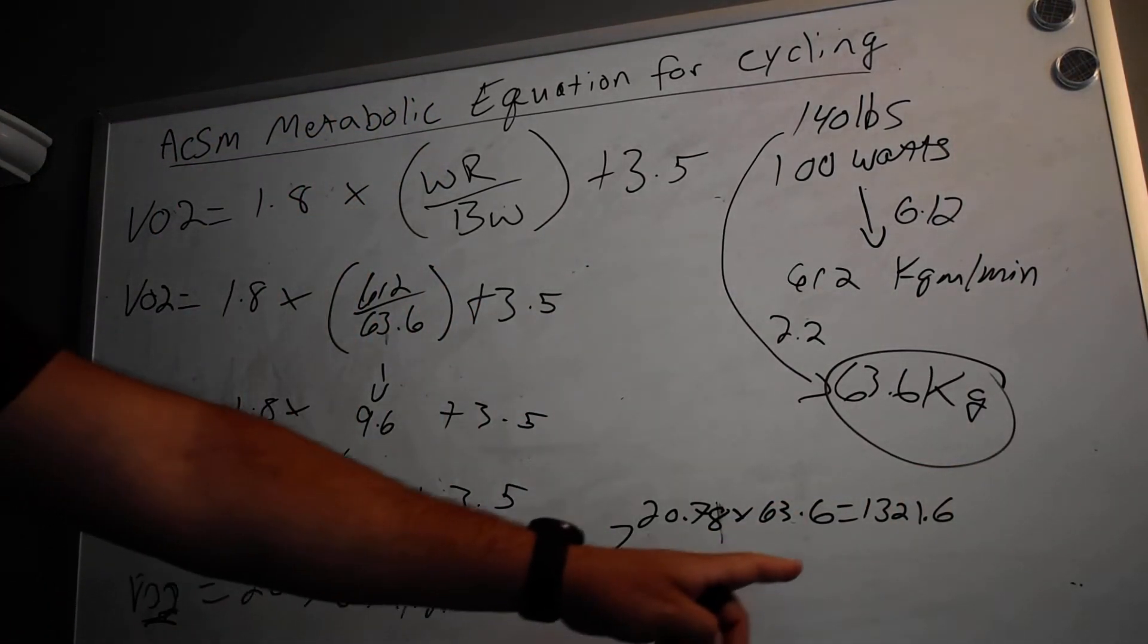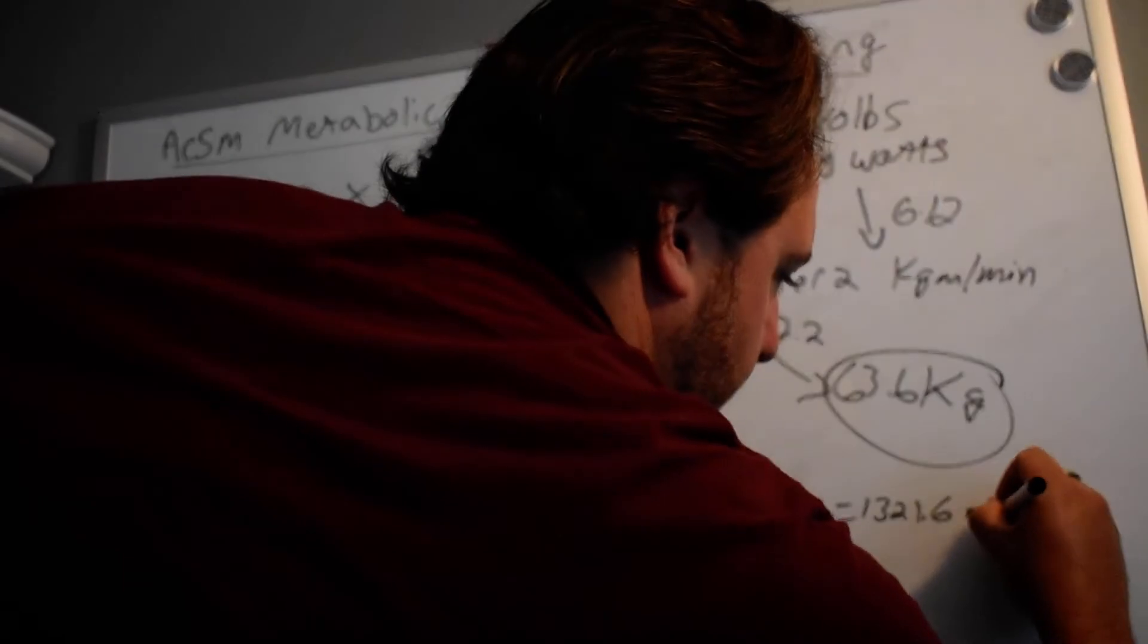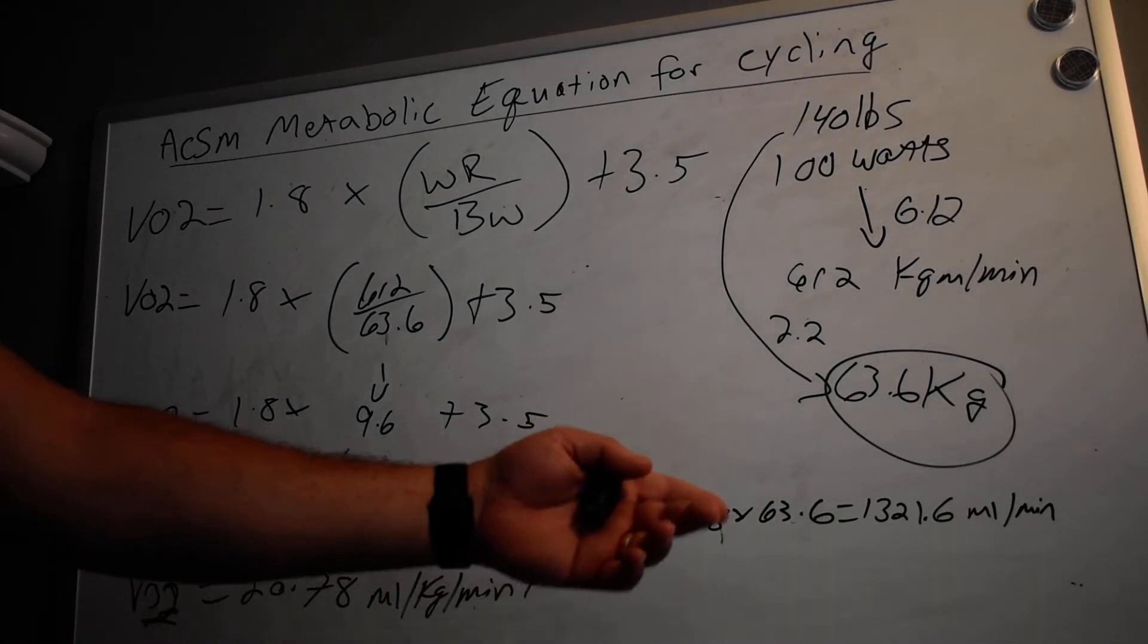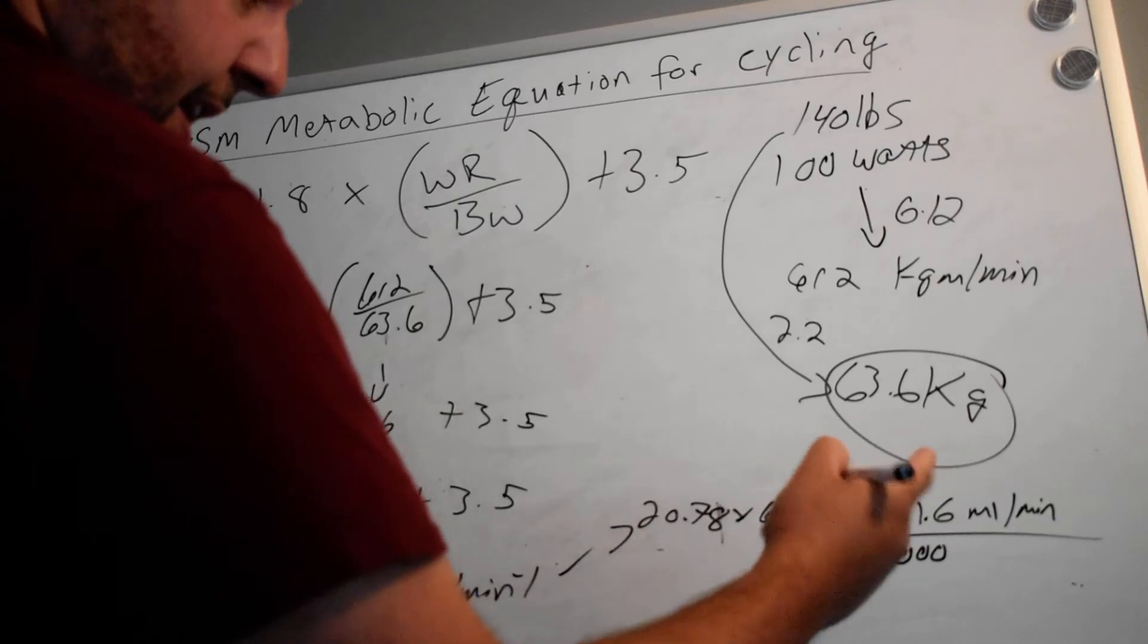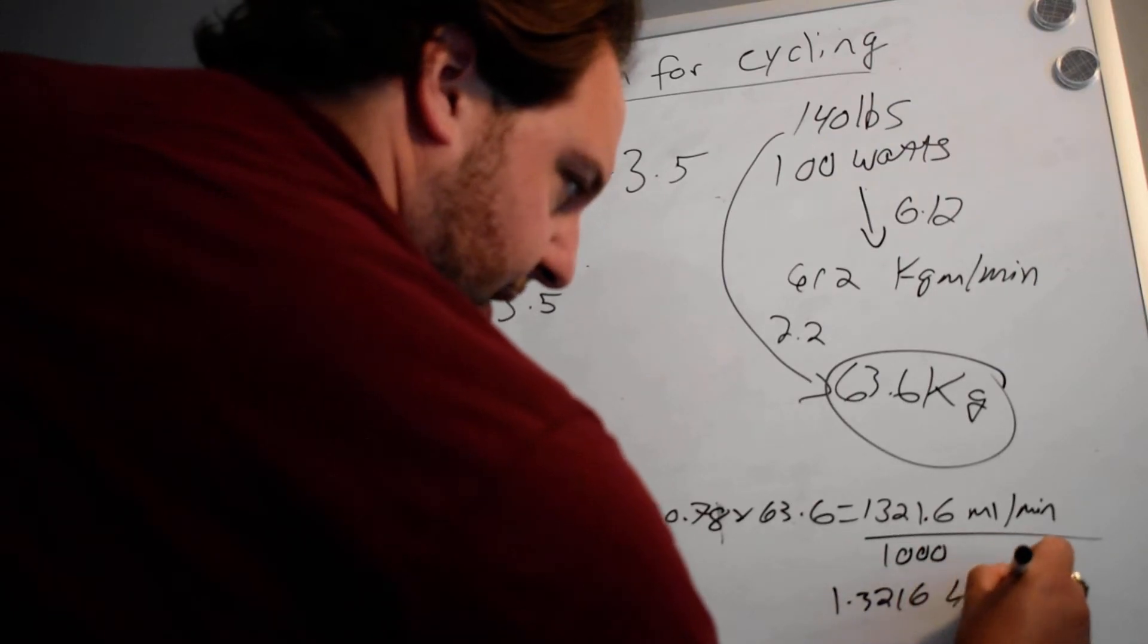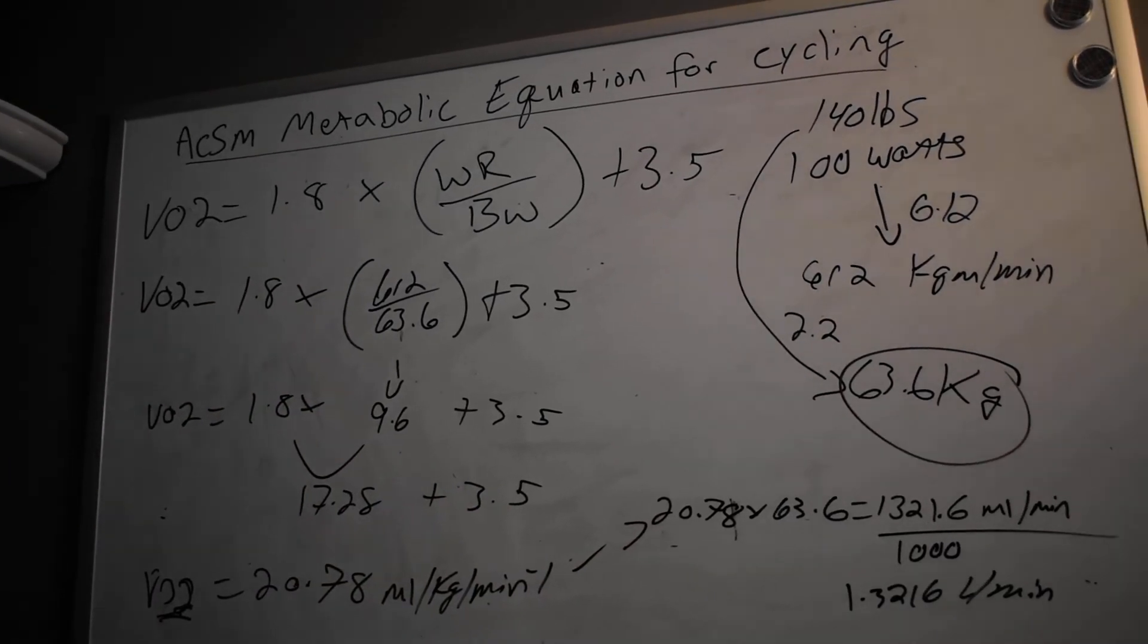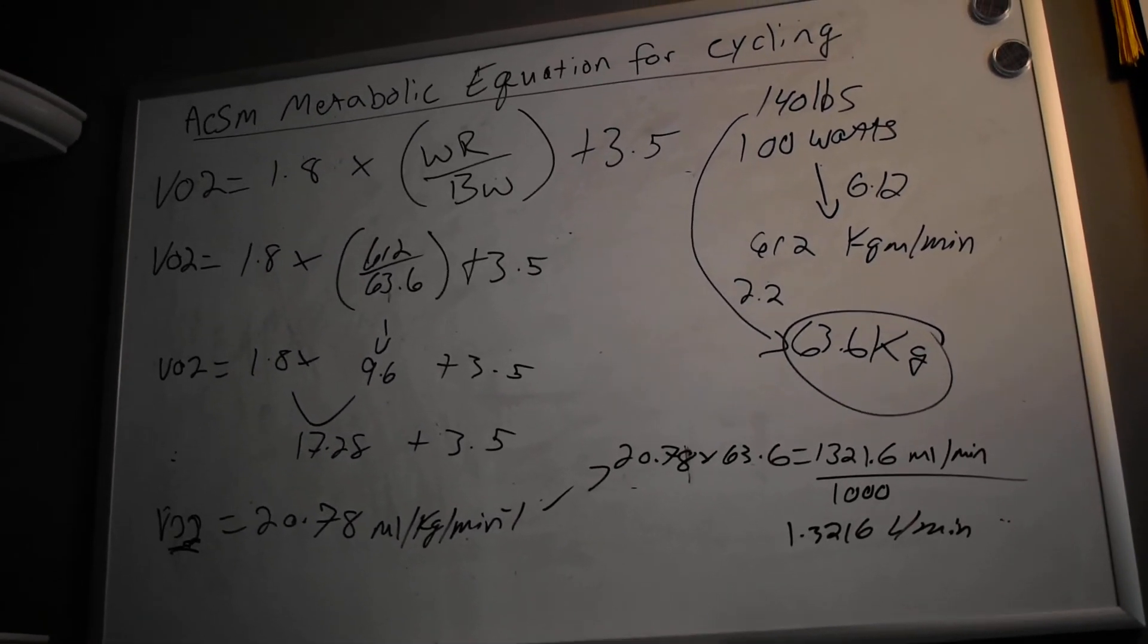Now this number is actually milliliters per minute of O2, so it's absolute because it's not taking into account body weight. So now all you have to do is divide this by a thousand, because there's a thousand milliliters in one liter, and that's going to give us 1.3216 liters per minute. Once you have this number, this 1.32, let's zoom out a little bit so we can maybe see the whole board and get the big picture.